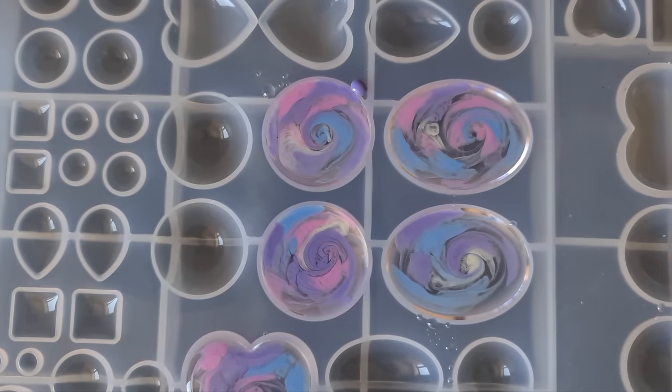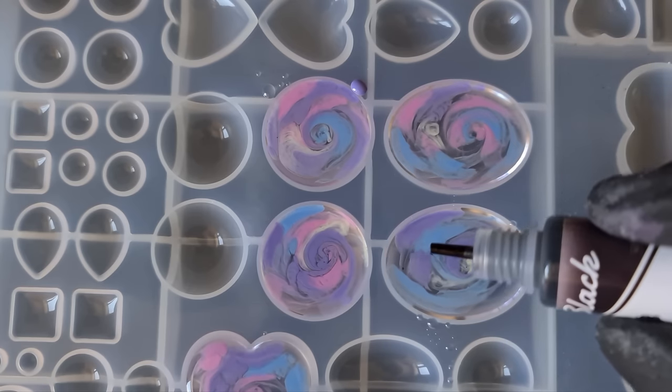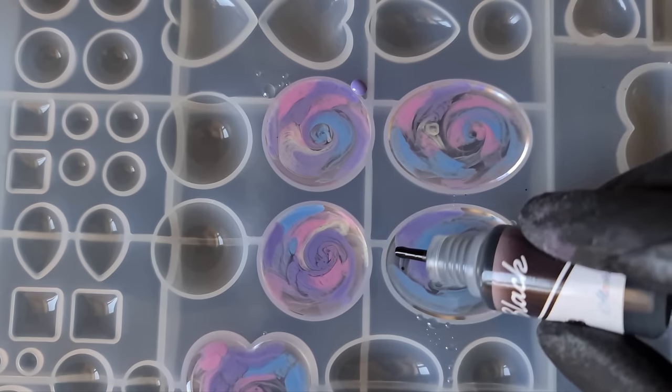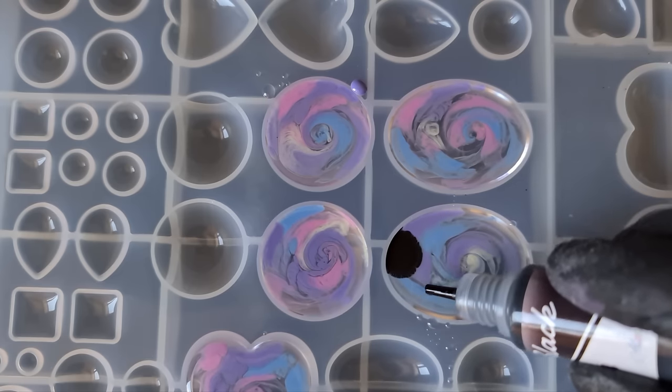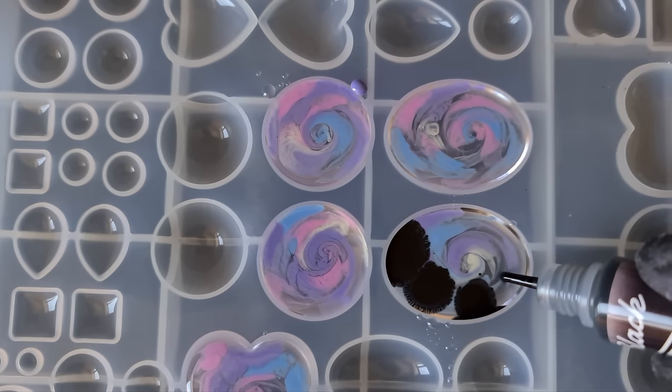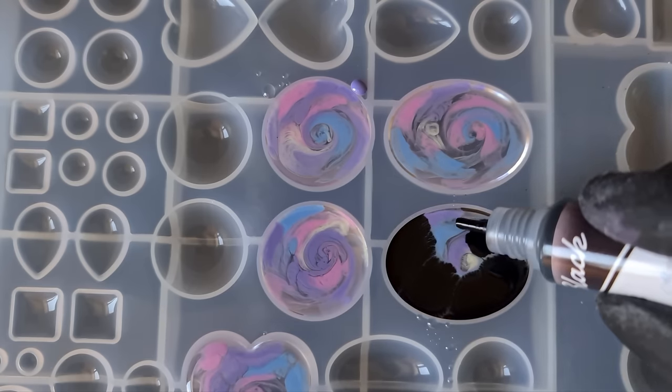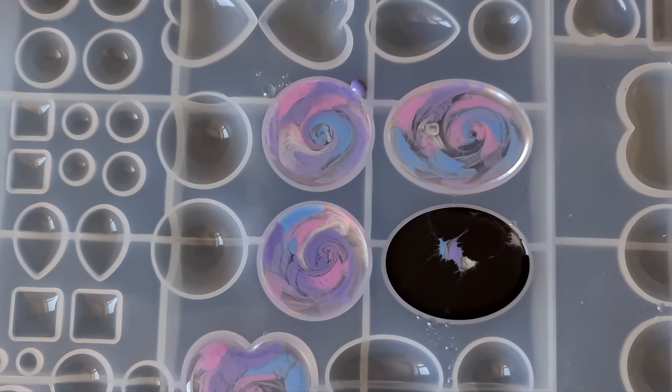Okay so it's now time to add my black alcohol ink. I might go in one or two with a white just to see if there's much of a difference. I am just coating the back or covering the back with the black, and then we just wait for the demold.